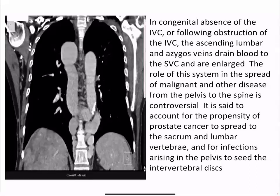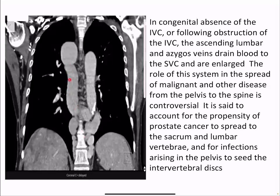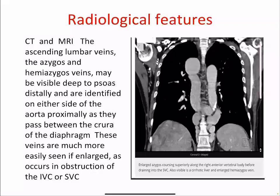The role of this venous system in the spread of malignant and other diseases from the pelvis to the spine is controversial. It is said to account for the propensity of prostate cancer to spread to the sacrum and lumbar vertebrae, and for pelvic infections to seed in the intervertebral disc. On CT and MRI, the ascending lumbar veins and the azygos and hemiazygos veins may be visible deep to the psoas, identified on either side of the aorta proximally as they pass between the crura of the diaphragm. These veins are much more easily seen when enlarged, as occurs in obstruction of the IVC or SVC.